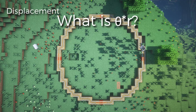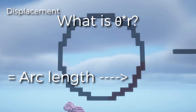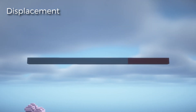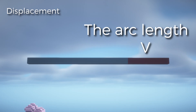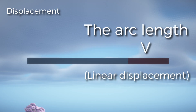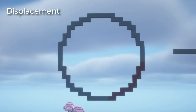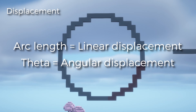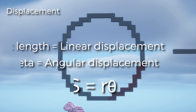However, what if we multiply theta and the radius? That gives us the arc length. If we unfurl this circle into a straight line, the arc length is actually the distance from one point along the line to the other, which is very similar to the linear displacement we've been learning. So arc length on a circle is the same as displacement on a line — and this is the first relation. This creates the equation S equals R times theta, where S is the linear displacement, R is the radius, and theta is the angular displacement.